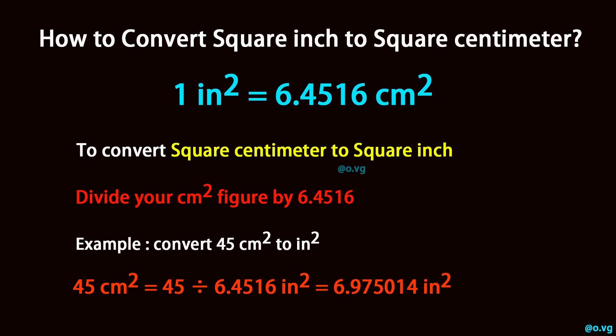Example: convert 45 square centimeter to square inch. 45 square centimeter equals 45 divided by 6.4516, which equals 6.975014 square inch.